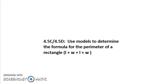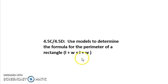Today, we're going to use models to determine the formula for the perimeter of a rectangle. The formula that we will implement will be length plus width plus length plus width. To find the perimeter of a rectangle, we have to add the length and width of each side.